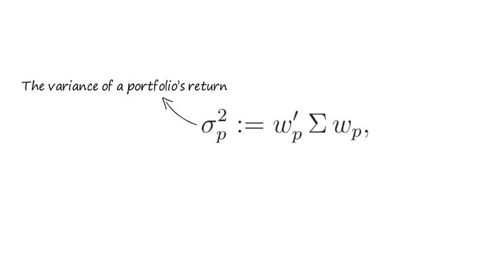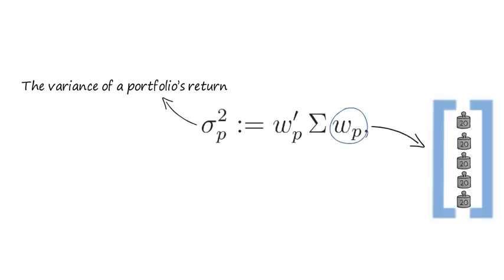The variance of a portfolio's holding period return, sigma squared p, equals the following expression, where Wp is the column vector of portfolio weights and capital sigma is the covariance matrix of asset returns.